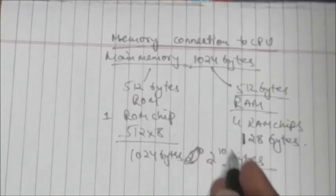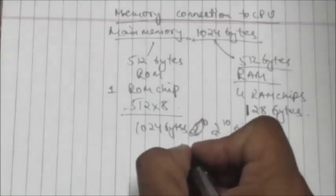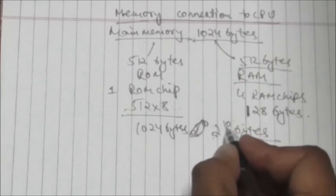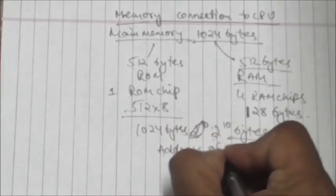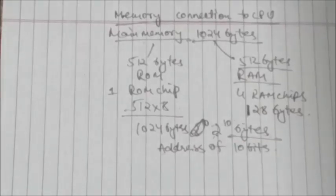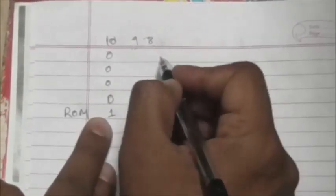To address a byte in main memory we need 10 address bits. The 10th bit of the address will specify whether the address is for RAM or ROM. If the 10th bit is 0, the address is for RAM; if the 10th bit is 1, it is for ROM.